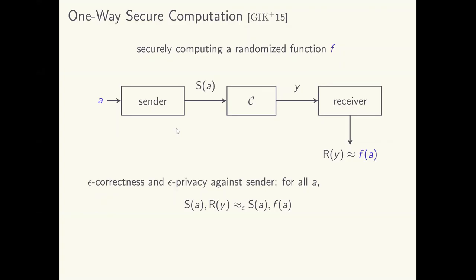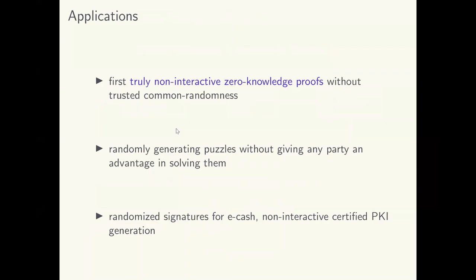Formally, correctness and privacy against the sender with epsilon error requires that the joint distribution of the sender's encoding and receiver's output is epsilon-close to the joint distribution of the sender's encoding and the output of the functionality. Privacy against the receiver requires that the channel's output can be simulated using only the receiver's output, i.e., F. Intuitively, in this model, the secure computation is necessarily carried out by the channel. The encoding and decoding are done to facilitate such secure computation by the channel.